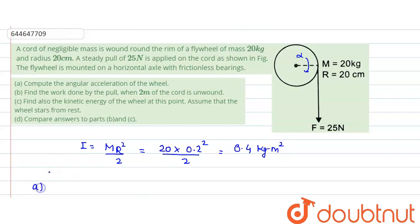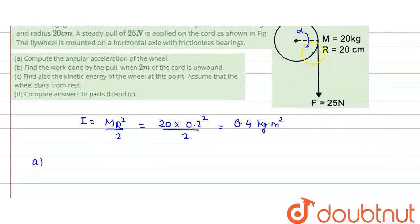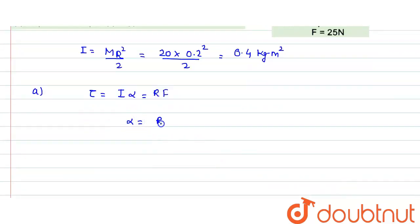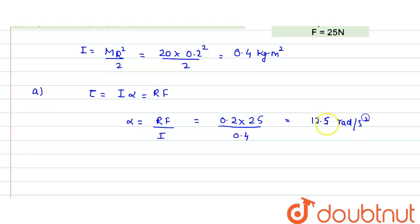In part (a), we need to find the angular acceleration. Due to the applied force, a torque is produced which causes the angular acceleration. We know that net torque equals I times alpha. The torque equals radius times force, so alpha equals r times F divided by I. Substituting: r = 0.2, F = 25, I = 0.4, so alpha turns out to be 12.5 radians per second squared.